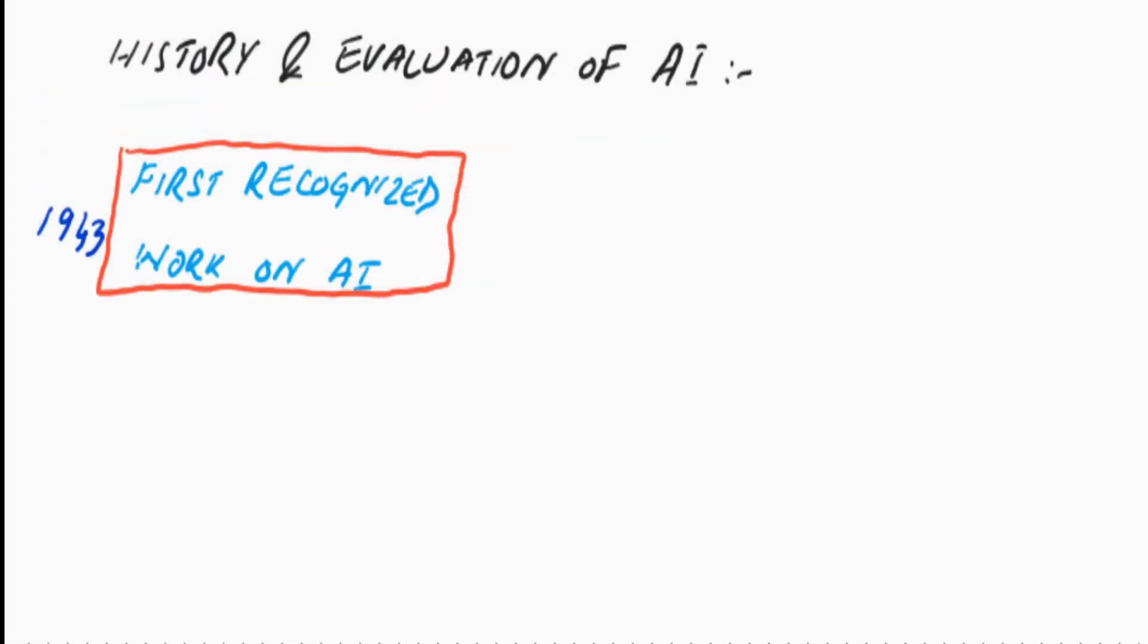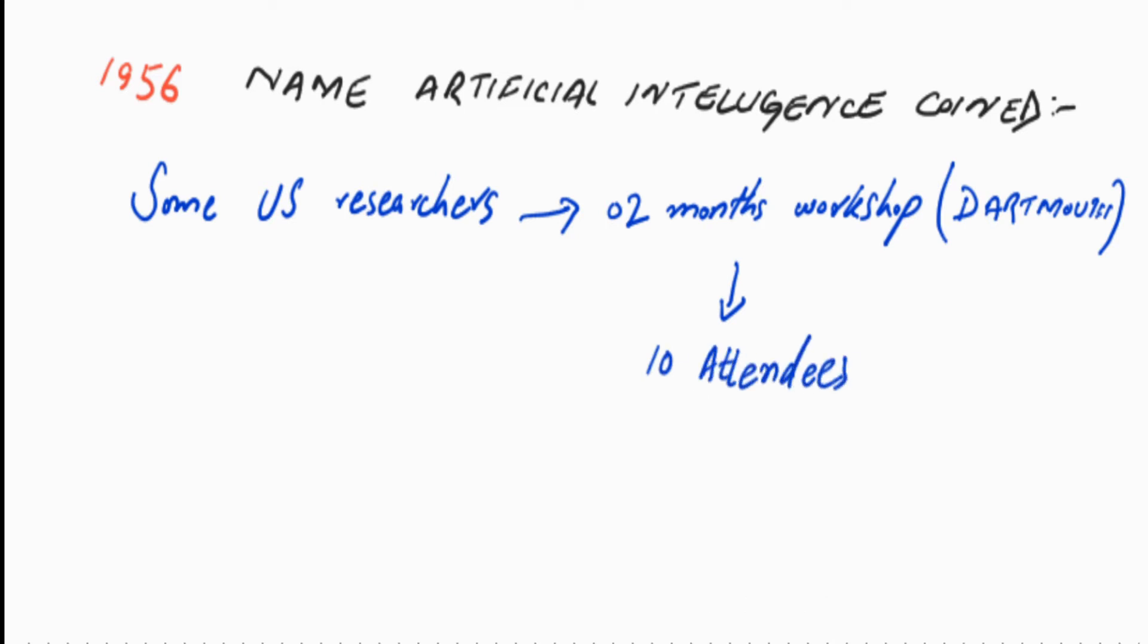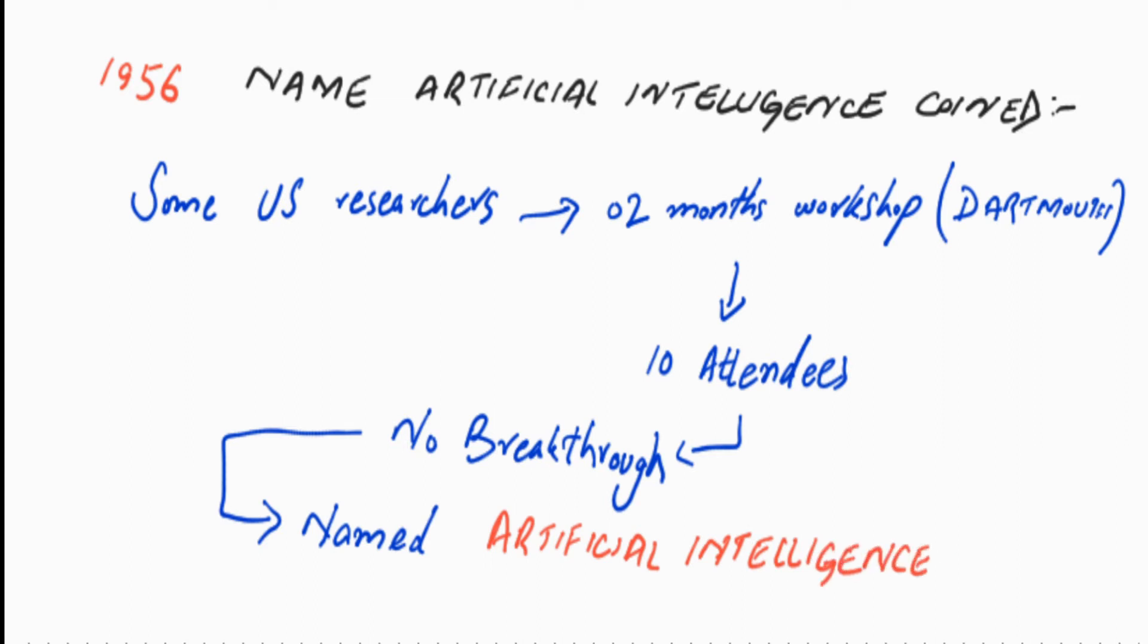After that, in 1956, the name of the field as artificial intelligence was coined. Some US researchers got together and organized a two-month workshop at Dartmouth. There were altogether only 10 attendees. Although all the researchers had some excellent ideas, the workshop did not lead to any new breakthrough. The most lasting and memorable thing that came out of that workshop was an agreement to adopt artificial intelligence as a new name for the field.